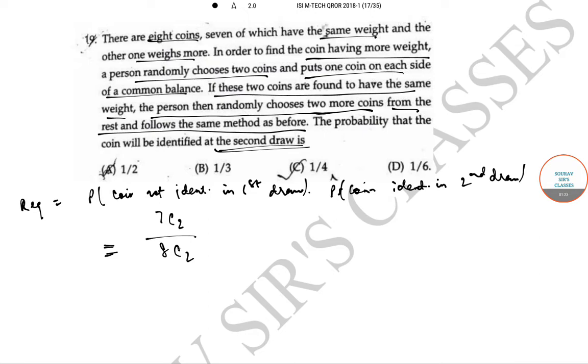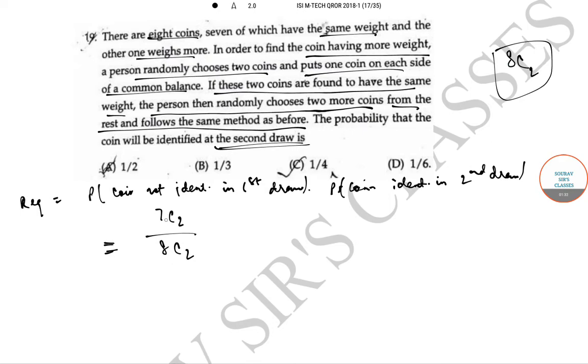We got this probability because 8c2 is the number of ways in which you can pick 2 coins from the above 8 coins and 7c2 is the number of ways in which you don't pick the heavier coin but you pick any 2 from the other 7 coins. These are the number of ways in which you can pick any 2 coins from the other 7 coins.